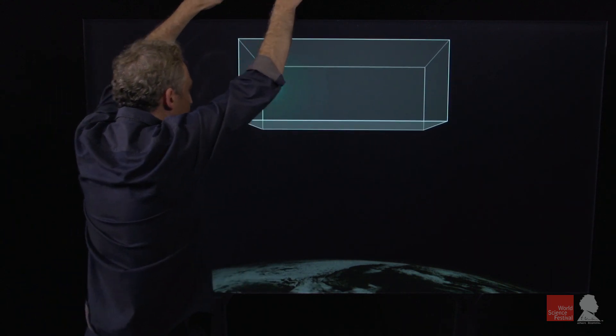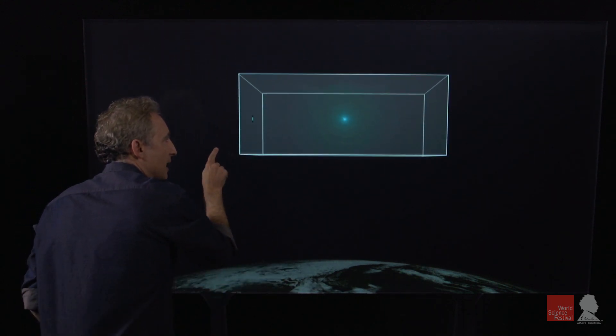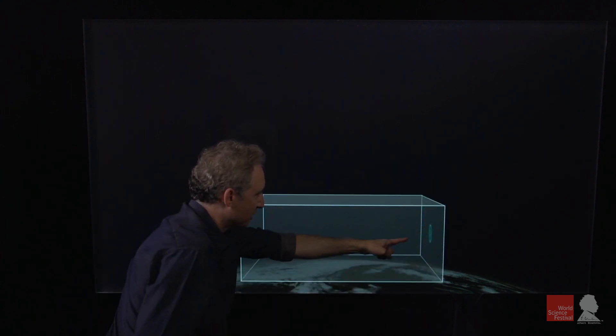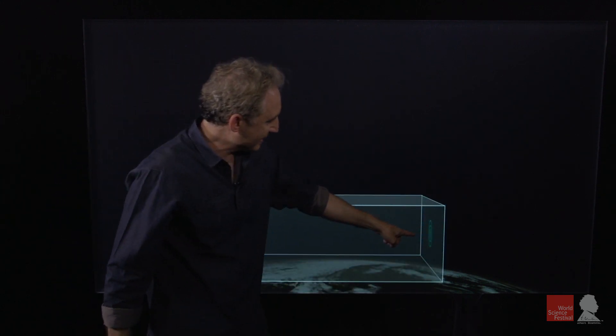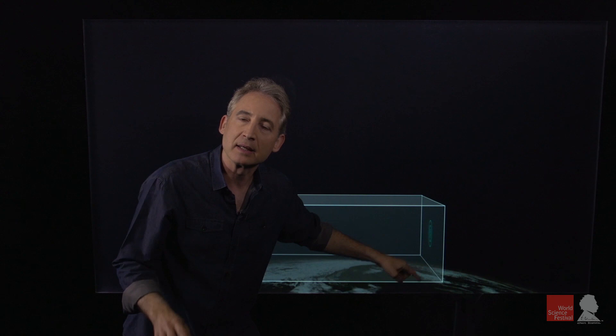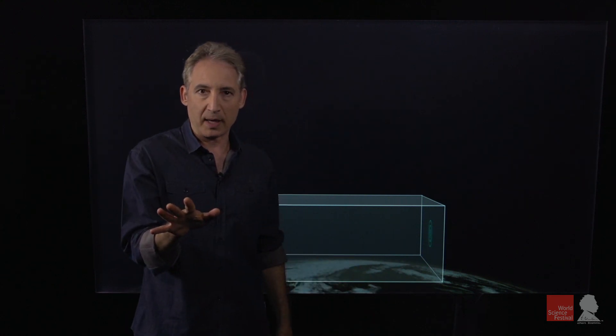So let's do that. The box is now in free fall motion. You turn on the laser and from your perspective the light goes straight across the box and hits at exactly the same point that it did when you were floating in outer space.